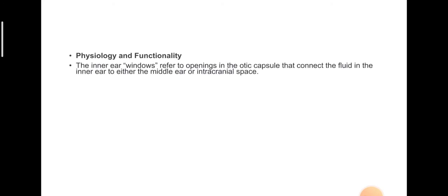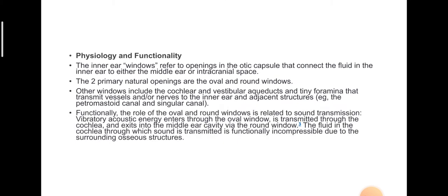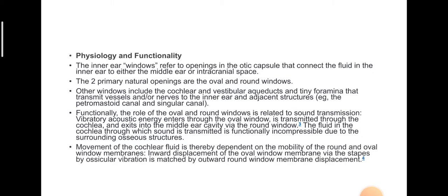The inner ear windows refer to openings in the otic capsule that connect the fluid in the inner ear to either the middle ear or intracranial space. The two primary natural openings are the oval and round windows. The role of the oval and round window is related to sound transmission: vibratory acoustic energy enters through the oval window, is transmitted through the cochlea, and exits into the middle ear cavity via the round window. The fluid in the cochlea is functionally incompressible, so movement is dependent on the mobility of the round and oval window membranes. Inward displacement of the oval window membrane via the stapes by ossicular vibration is matched by outward round window membrane displacement.